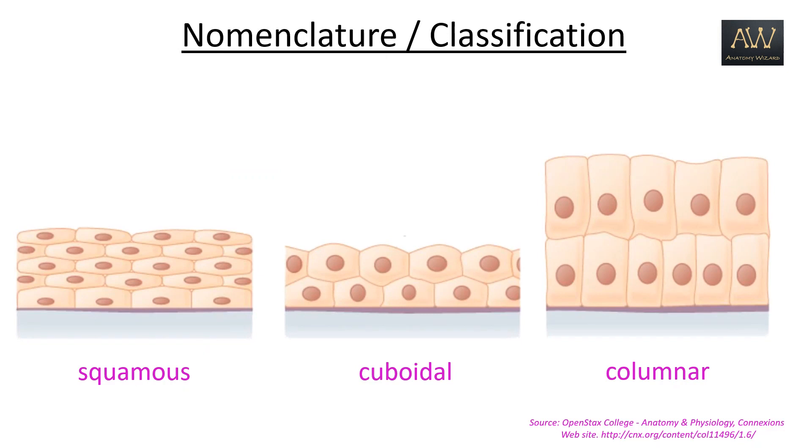However, all the cell layers in a particular stratified epithelium may not be of the same shape. Then how do we determine the type of epithelium in such a case? It is important to note that the shape of the cells of the outermost layer determines the type of stratified epithelium.